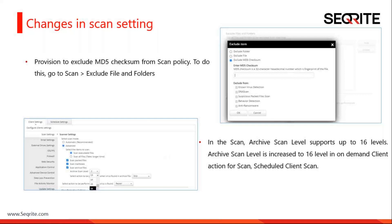We have also done changes in scan settings. A provision has been added to exclude MD5 file checksum from the scan policy — just go to scan, exclude files and folders, enter the MD5 checksum value, and click OK. Additionally, in the scan settings the RKU scan level now supports up to 16 levels, providing deeper scanning for archive files.